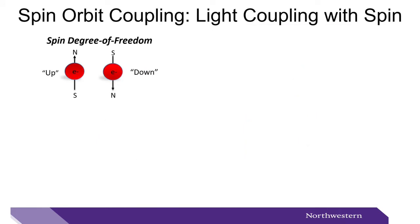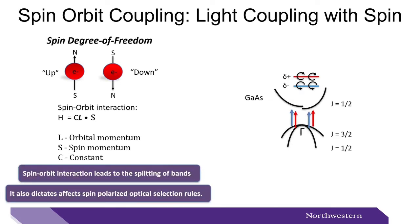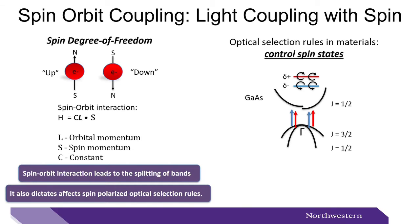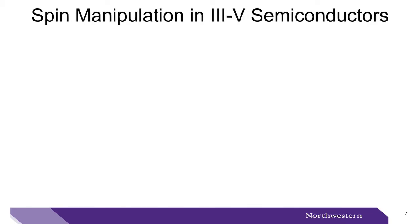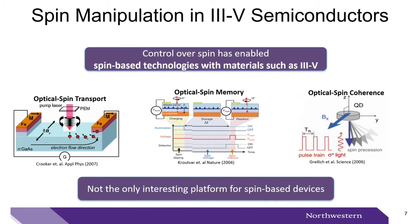A quintessential piece to our ability to couple light to spin is the spin-orbit interaction. This interaction leads to the splitting of solid-state bands in materials like gallium arsenide. It also helps facilitate and influence spin-polarized optical selection rules, and these optical selection rules allow us to control spin states in these materials. With this control over spin, spin-based technologies have been created and studied with classic materials such as 3-5 semiconductors. This includes optical spin transport, optical spin memory, and optical spin coherence. However, 3-5 semiconductors are not the only interesting platforms for spin-based devices.